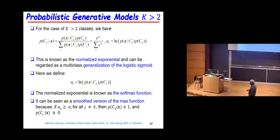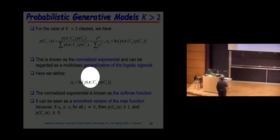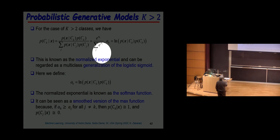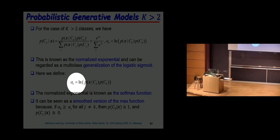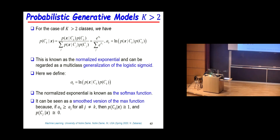For many classes, we redefine the coefficients alpha_k as the log of p(x|c_k) times the prior of c_k. What we get is the softmax function, which produces probabilities from 0 to 1. It is called softmax because if alpha_k is much greater than all the other alpha_j's, it approximates 1, otherwise 0. This function appears everywhere and is fundamental not only to classification problems.